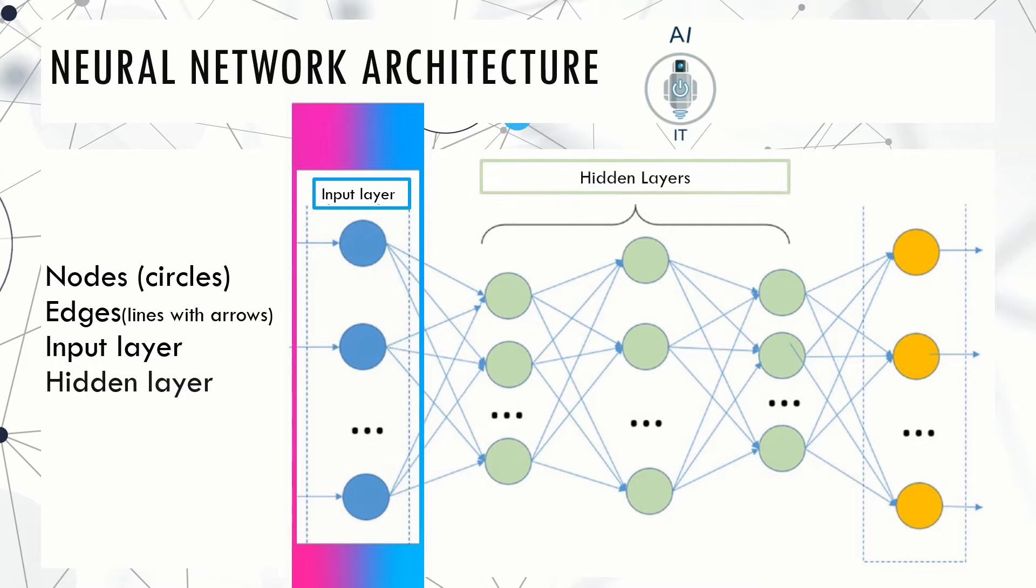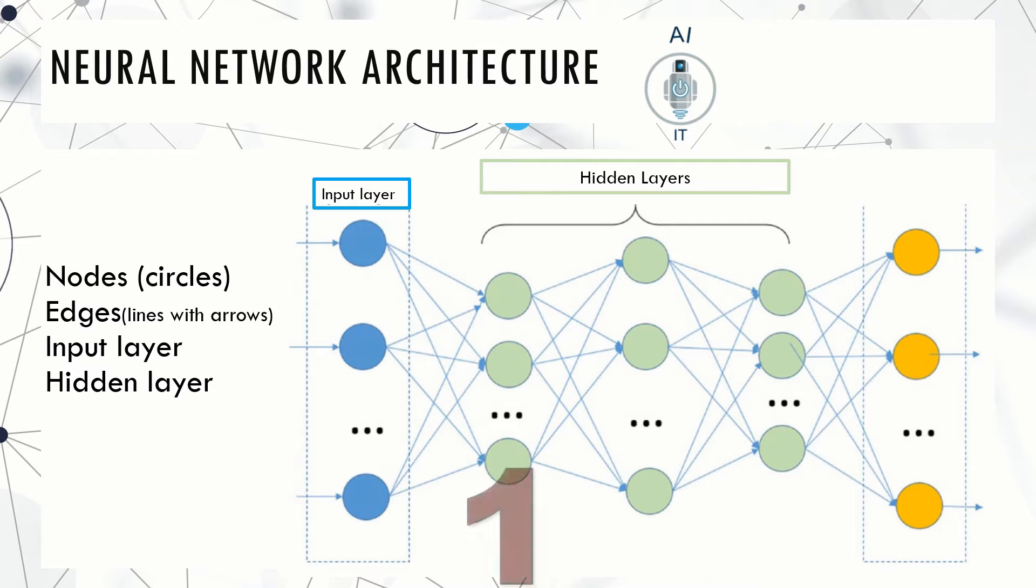Next to these are the hidden layers. There can be multiple hidden layers. In the given picture, there are three hidden layers. As the name indicates, these layers are hidden, which means they are not visible.